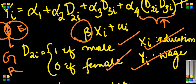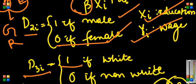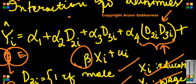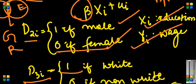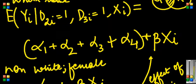D_2i is 1 if male, 0 if female, and D_3i is 1 if white and 0 if non-white. I want to find out the average wage of a white female. White female would mean I would put D_2i equal to 0, I would put D_3i equal to 1. This is 0, this is 1, and I know that product of 0 into 1 is 0. So my average wage of a white female is α_1 + α_3 + β X_i.